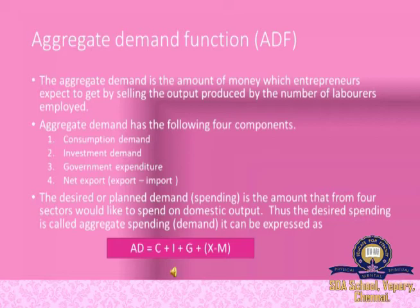The desired or planned demand is what households, firms, the government, and foreign purchasers would like to spend on domestic output. In other words, desired demand in the economy is the sum total of desired private consumption expenditure, desired investment expenditure, desired government spending, and desired net exports — the difference between exports and imports. This desired spending is called aggregate spending, otherwise known as aggregate demand.